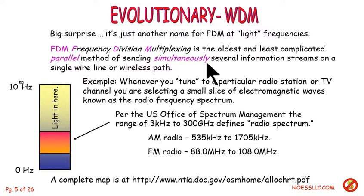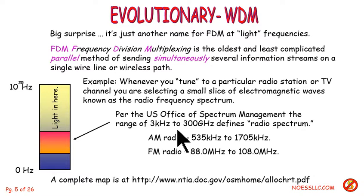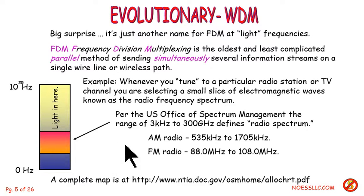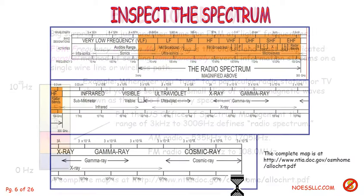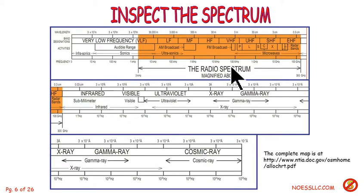So I'm sending them simultaneously — several information streams on this single wire or wireless path. When you tune to a radio station, AM radio or FM radio, you're pulling out from a stack of frequencies the particular one you want to listen to. There's a complete map of the radio spectrum at this location — it's a government document, you can go out and get it. I have just a little piece of it here.